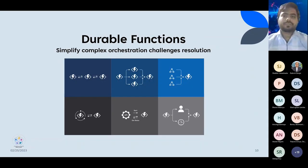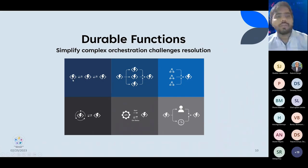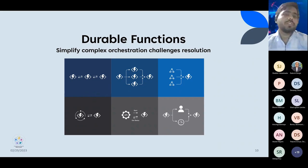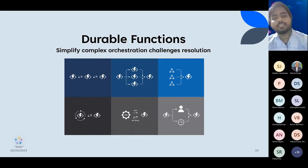I'm not going to cover durable functions in depth, but a quick introduction: an Azure Function can be connected to another Azure Function - one Azure Function can be connected to three. So you can use Azure Function as a durable function. What it does is distribute your workload according to your pipeline, and you use input and output bindings to do a process very smoothly.